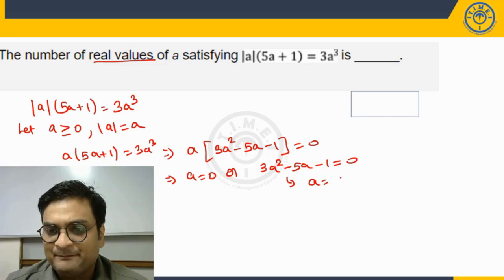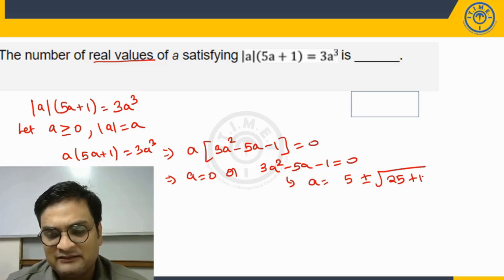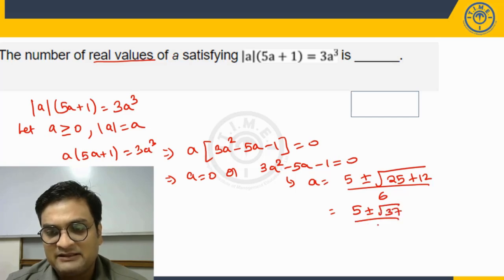it is going to be minus b plus or minus root over b square minus 4ac. So it is going to be plus 12 by 2a, 6. It is going to be 5 plus or minus root 37 by 6.